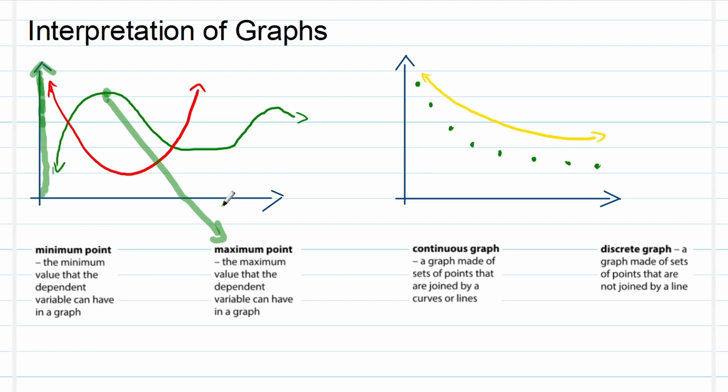The same here with the minimum point. You can see that's the lowest output value, right over here, and that's our minimum point. So the minimum value that the dependent variable can have in the graph.